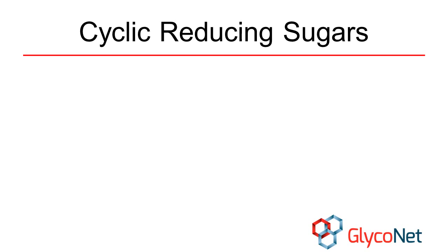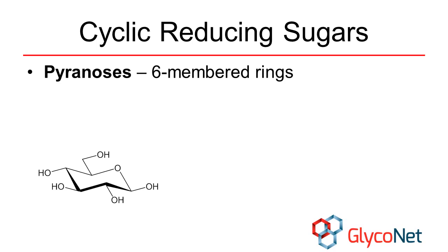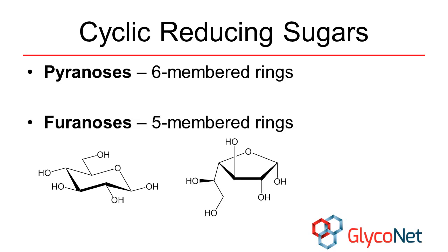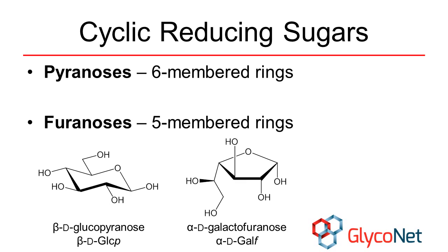As mentioned in the introductory module, sugars prefer to adopt ring forms as opposed to open chains. 6-membered sugars are called pyranoses, while 5-membered sugars are called furanoses. These descriptors are included in the sugar name to specify the ring size, and a lowercase p or f is used in the short form of the name. Once sugars form rings, it is also necessary to specify whether the alcohol on carbon 1 is in the alpha or beta configuration. The method for distinguishing alpha and beta anomers is explained in the intro module.